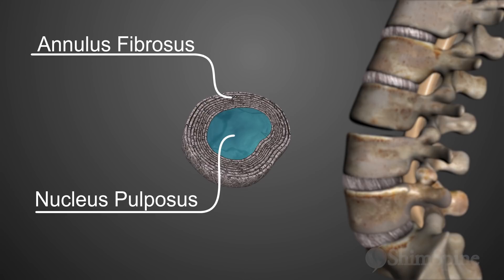The nucleus pulposus is typically full of water and, at least when you're young, has a jelly-like consistency. The nucleus pulposus functions as a shock absorber.